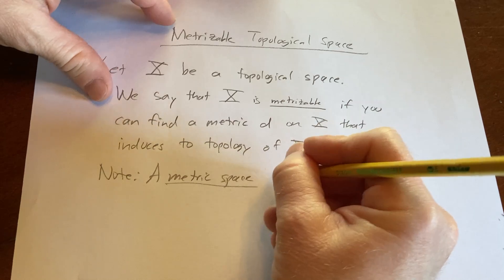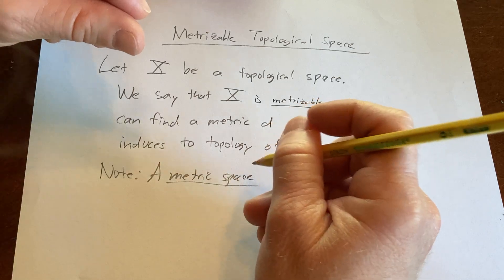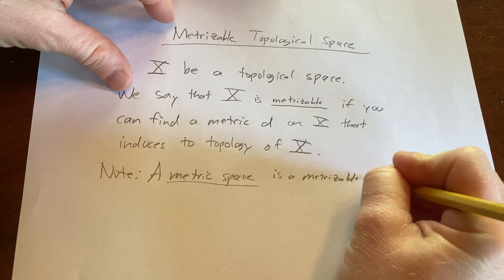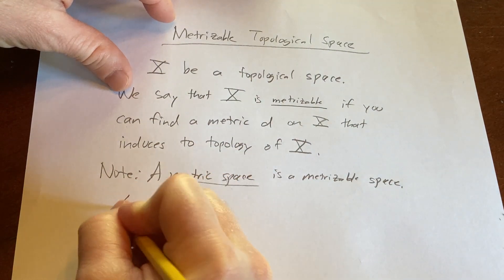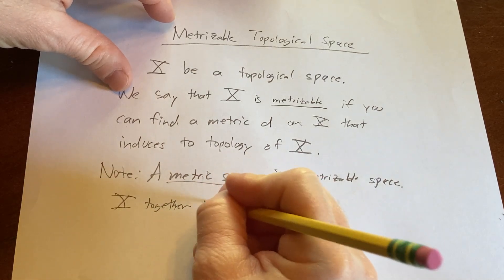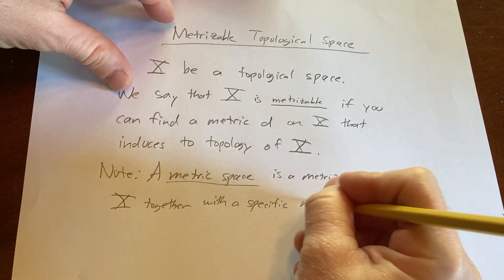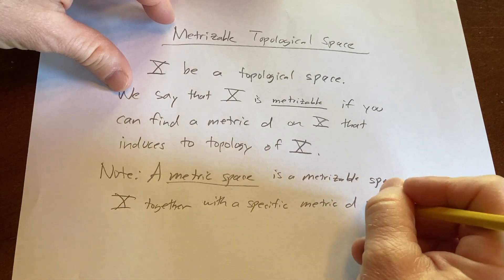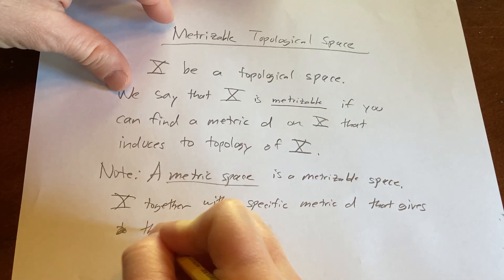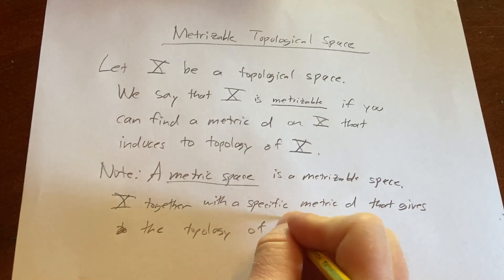Although typically you want the metric space axioms so you know exactly what's happening. A metric space is a metrizable space X together with a specific metric d that gives the topology of X.